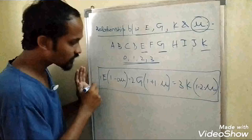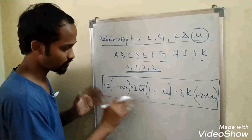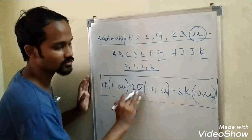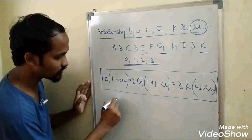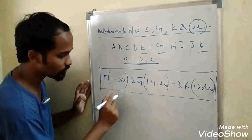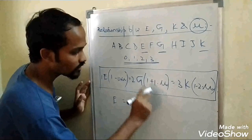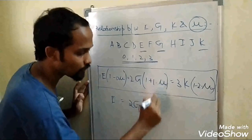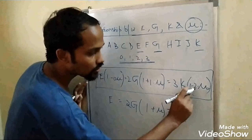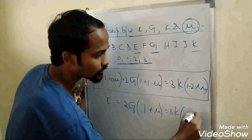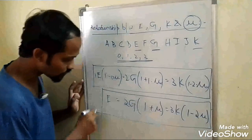I think you must have remembered this now. This is a simplified way I am writing it — it is not shown like this in the book. After solving this, it becomes: E equals 2G, where 1 into Mu is just Mu, giving (1 + Mu); equals 3K, where 2 into Mu is 2Mu, giving (1 minus 2Mu). So the generalized formula is E = 2G(1 + Mu) = 3K(1 - 2Mu).